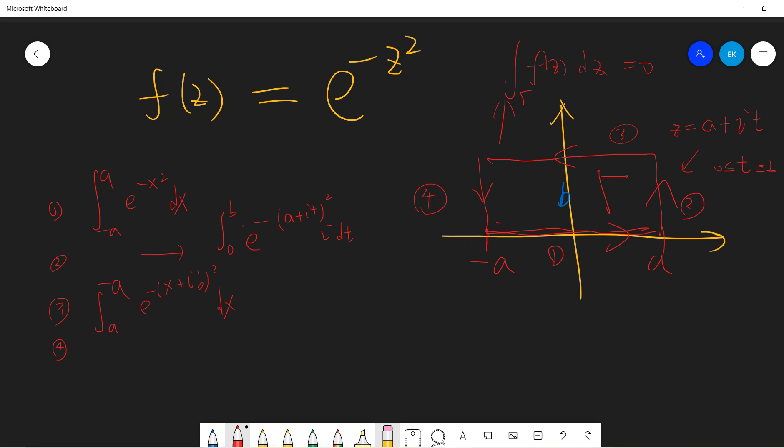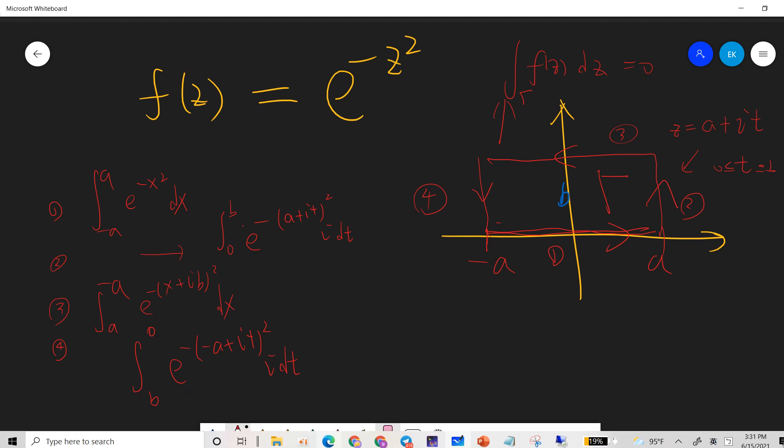The fourth one is the same: negative a plus it squared times i dt, but from b to zero. Now we have the four results for the four integrals, and what our contour integration result tells us is that the sum of the four of them should be zero.